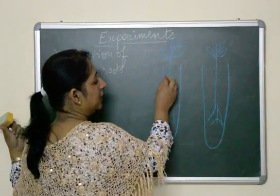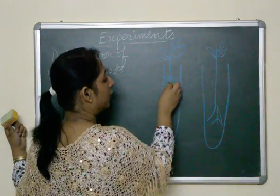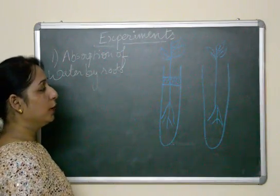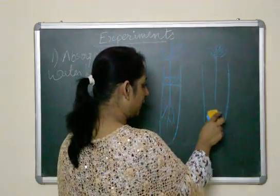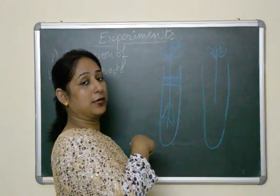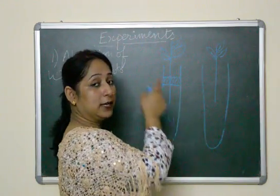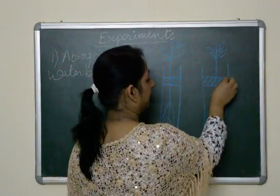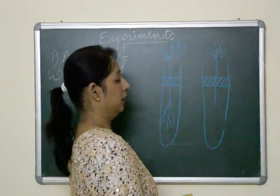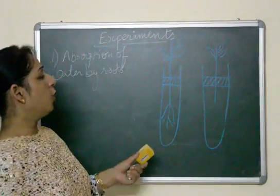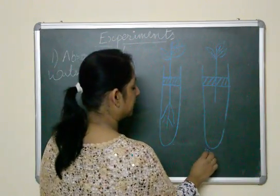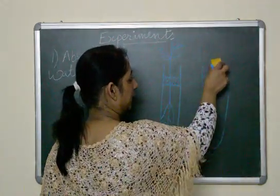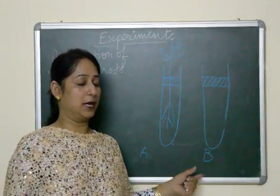In the first test tube, we will place a film of oil over the surface of the water. In the second test tube, we will place a twig without roots. This is test tube A (with roots and oil) and test tube B (without roots, with water only).